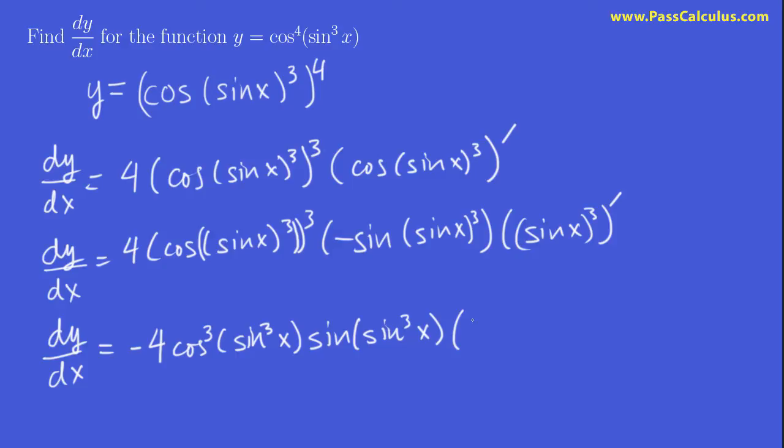So the 3 is going to come to the front, times sine x squared. I'm just going to go fast and put it there. Times the derivative of sine x, which is cos x.